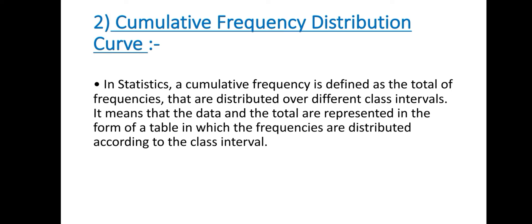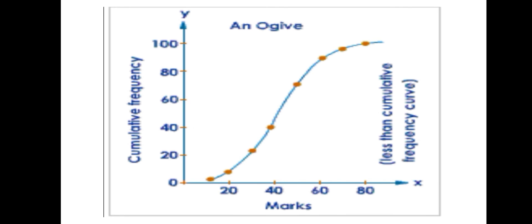Second method is cumulative frequency distribution curve. In statistics, a cumulative frequency is defined as the total of frequencies that are distributed over different class intervals. It means that the data and the total are represented in the form of a table in which the frequencies are distributed according to the class intervals. Here is a graph which shows cumulative frequency graph.